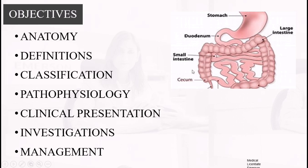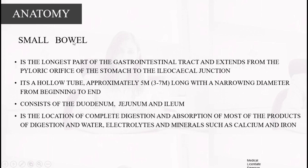Let's start with the anatomy part — the small bowel. The small bowel is the longest part of the gastrointestinal tract. It extends from the pyloric orifice of the stomach to the ileocecal junction. It is a tubular structure approximately three to seven meters long, with a narrowing diameter from beginning to end. It consists of the duodenum, jejunum, and ileum, and is the location of digestion and absorption of most products of digestion and water.